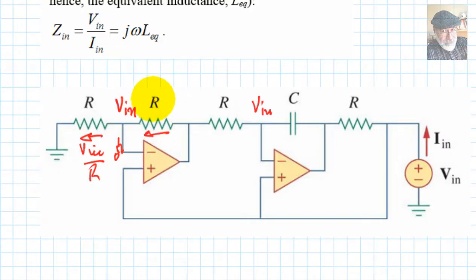And it's producing a voltage drop that is, of course, Vin in this resistor. So the voltage here is 2 times Vin is Vin plus this drop, Vin, 2 times Vin.